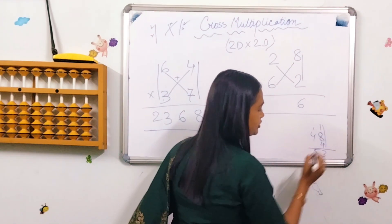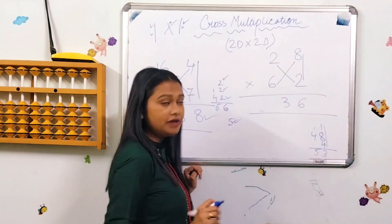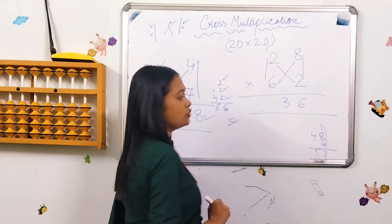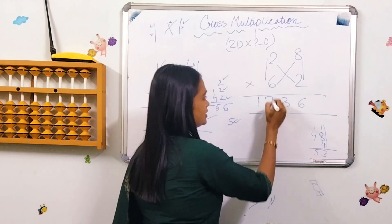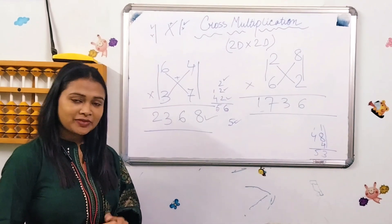Then 2 into 6 is 12, and plus carry 5 is 17. And here is your answer: 1736.